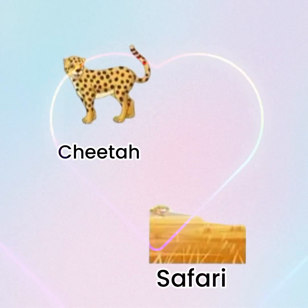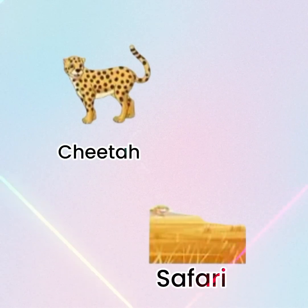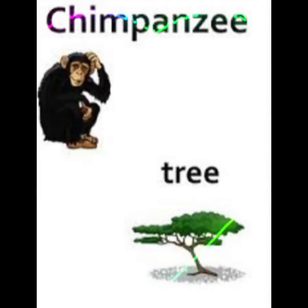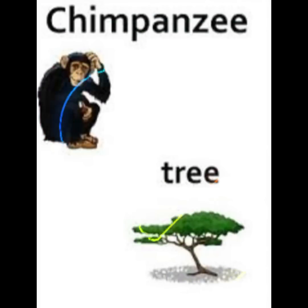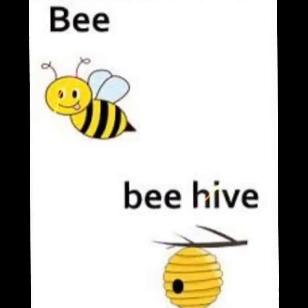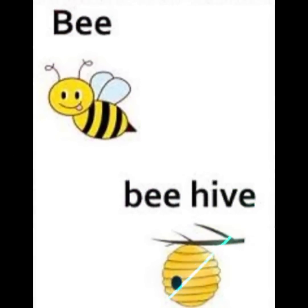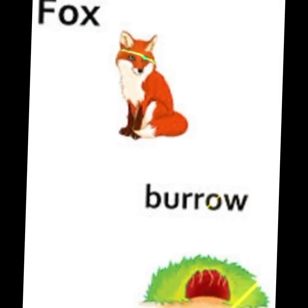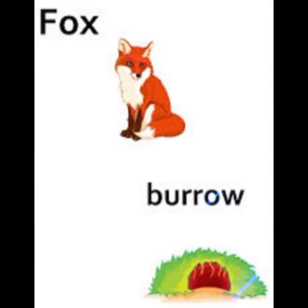Cheetah — cheetah lives in the safari where it can get its prey. Chimpanzee — chimpanzee lives in trees in the jungle, in the forest. Bees — bees live in a hive. Fox — fox usually lives in a den but sometimes lives in a burrow.